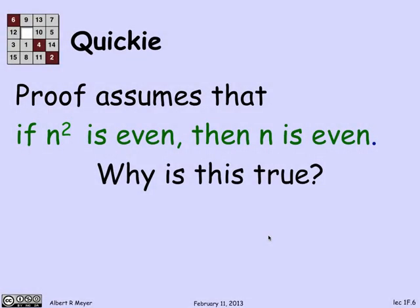Now, I did assume something that is kind of obvious, namely, that if n squared is even, then n is even. Why is this true? Well, you might think about it for a moment. There's a simple way to see it. And it's a proof by contradiction.